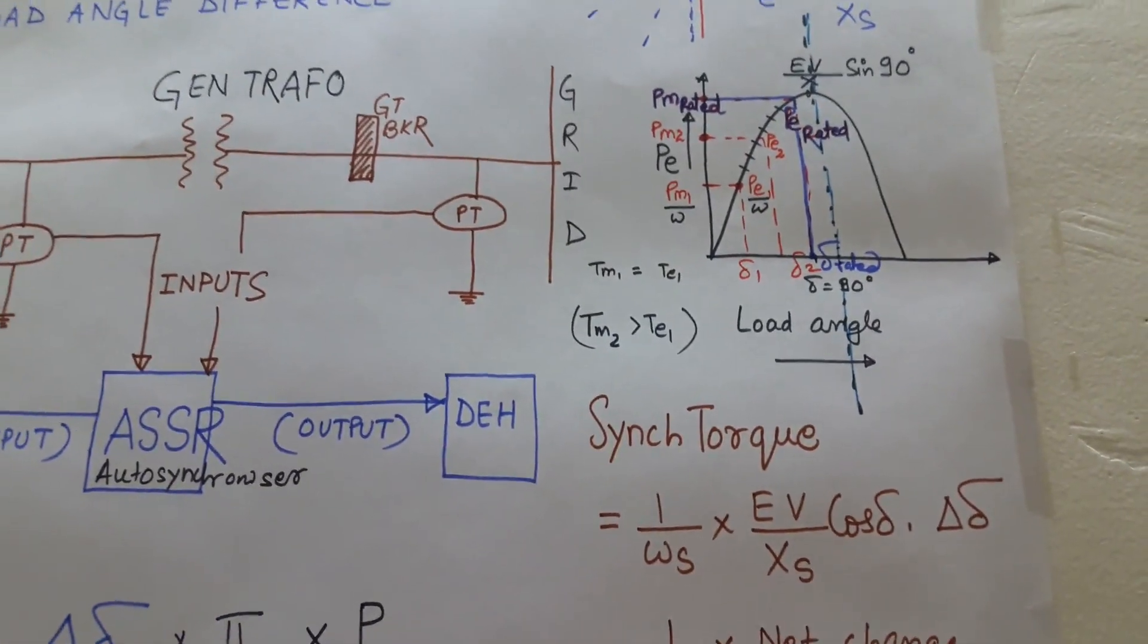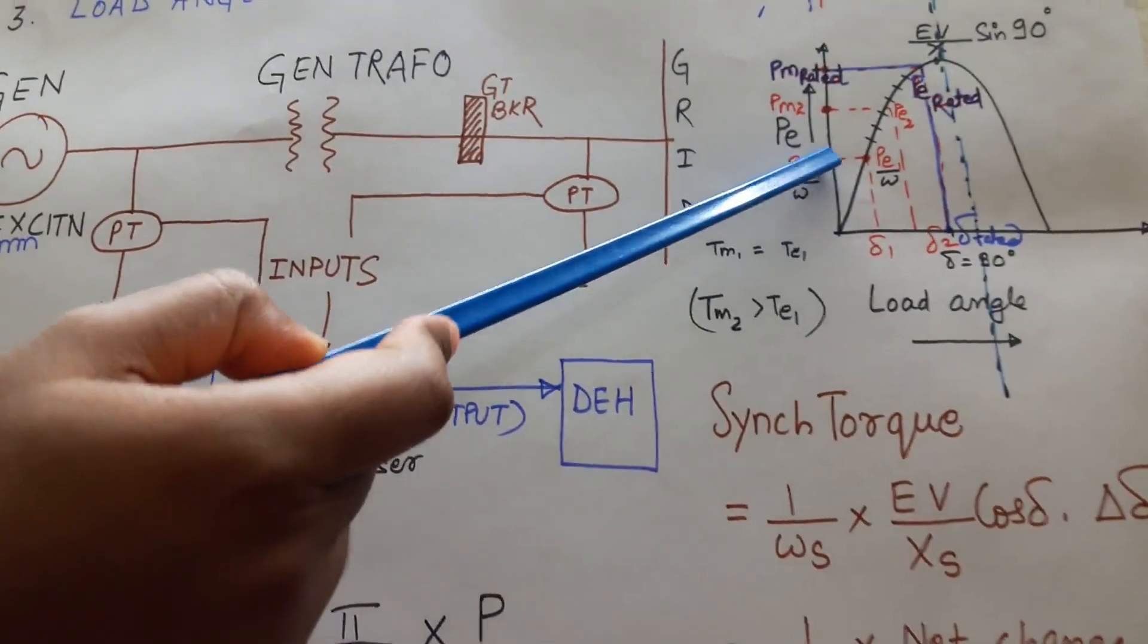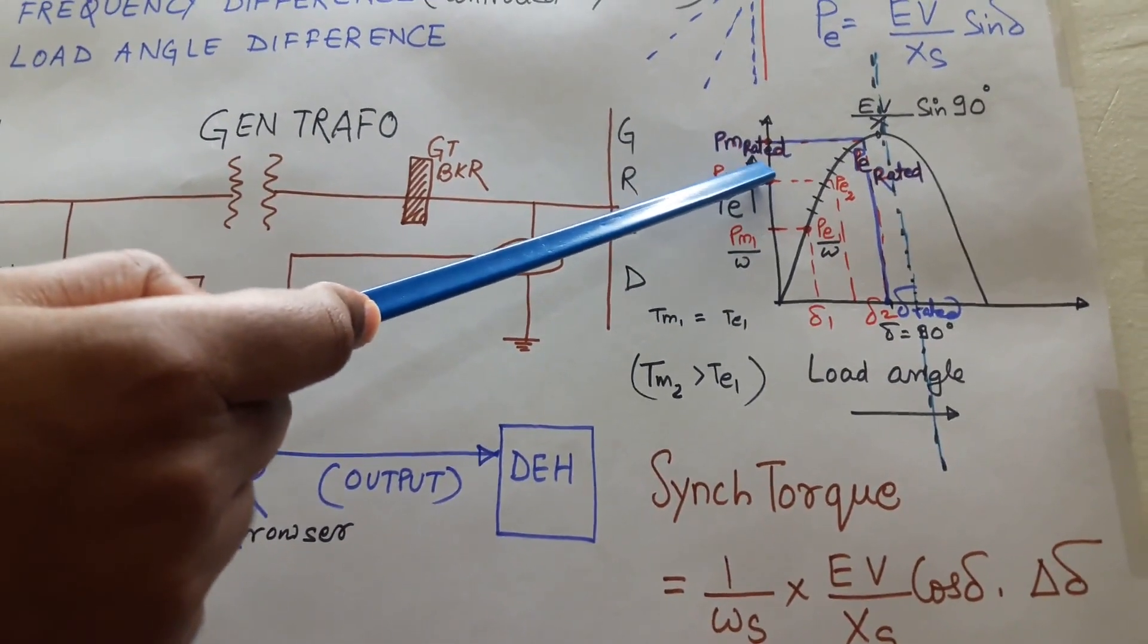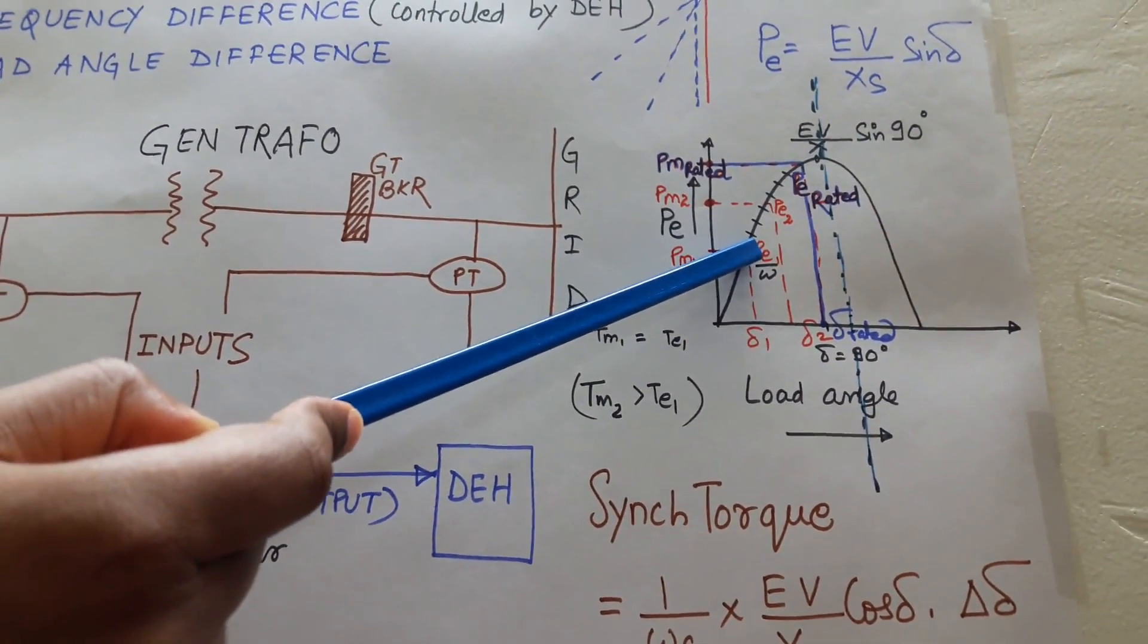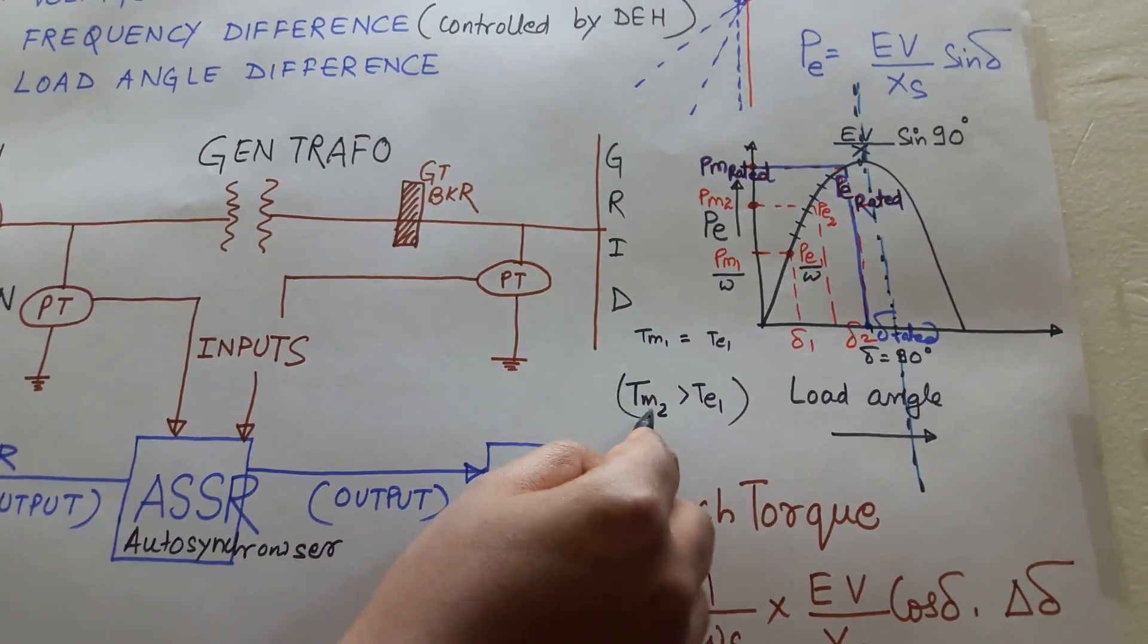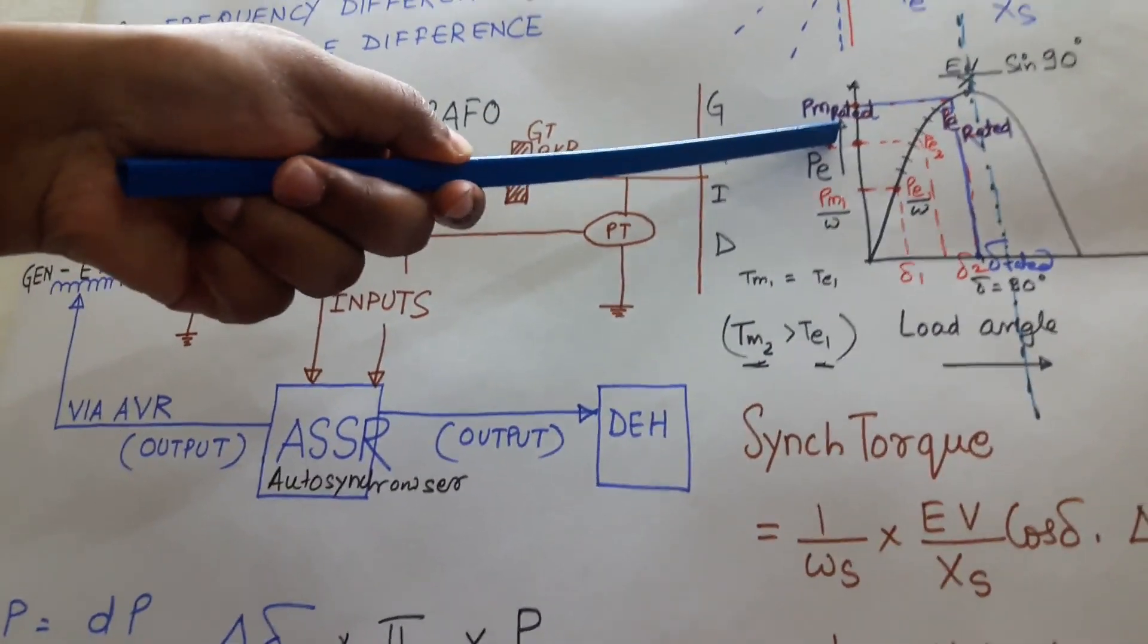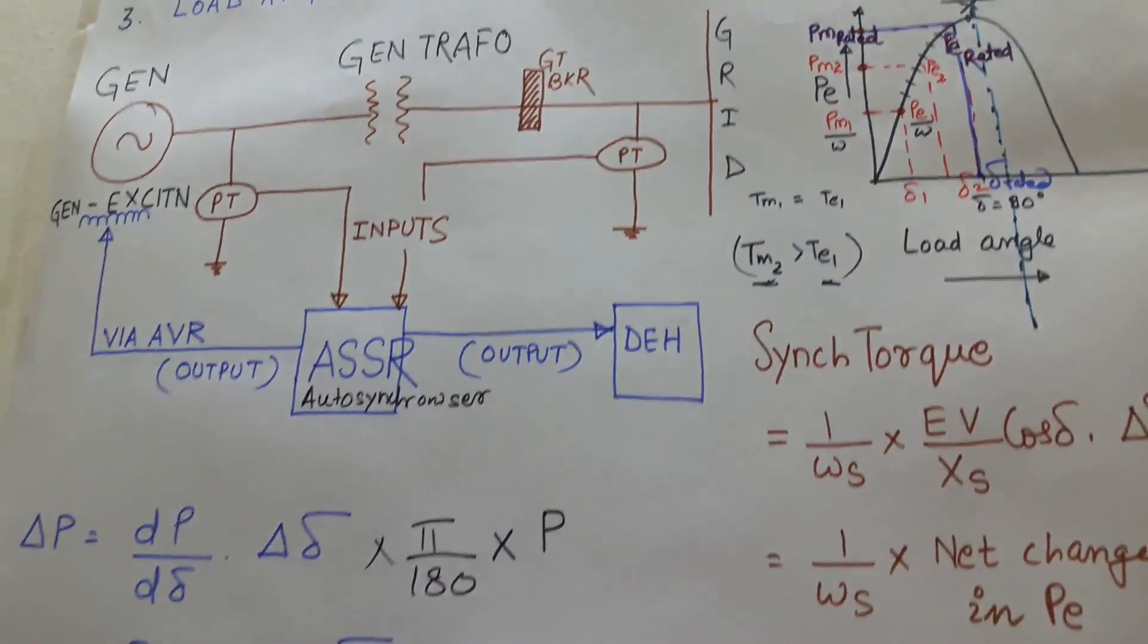Suppose suddenly the governor valve is open in such a way that the PM1 is raised to a value of PM2. But the electrical output is still PE1. So from PM2, the torque we get is TM2 but the electrical output is TE1. So here the TM2 becomes greater than TE1, so this is a clear case of acceleration.